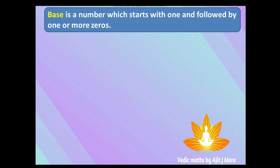Base is a number which starts with one and it is followed by one or more zeros. So what is a base? It's a number which starts with one and followed by one or more zeros. For example, 10 is a base because it starts with one and is followed by zero.